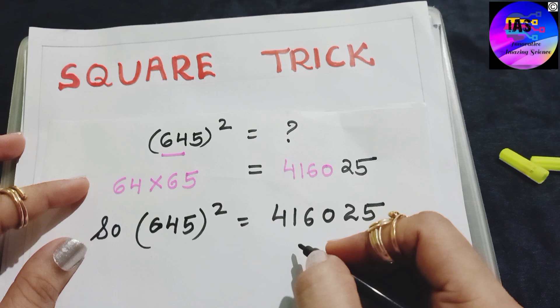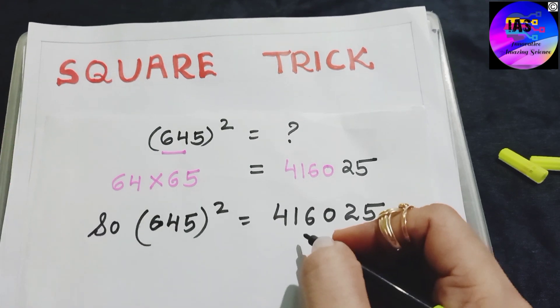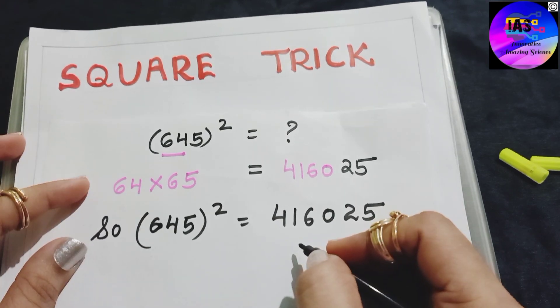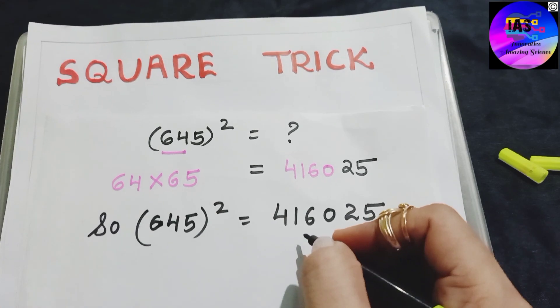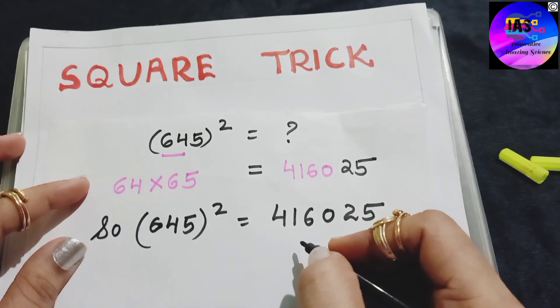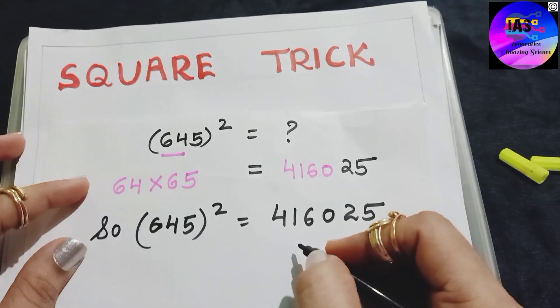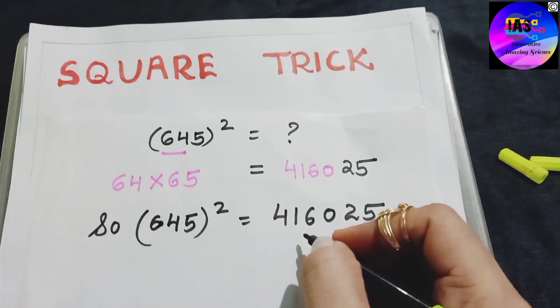The successor of 64 is 65. So 64 into 65 is 4160, and we had already written 25, so the answer is 416025.